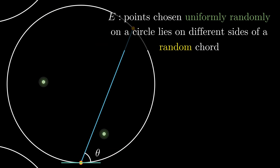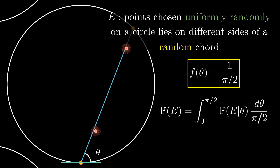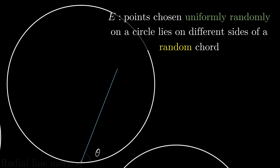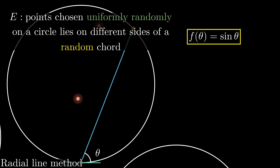With the circumference method, where we chose two points uniformly randomly on the circumference of a circle, θ is uniformly distributed. Using the expression of the probability given θ, we can evaluate this integral and show that the probability is 1/3 − 5/(4π²). With the radial point method, where we selected a random point and a random radial line, the density function is sin θ. The probability in this case comes out to be 128/(45π²).